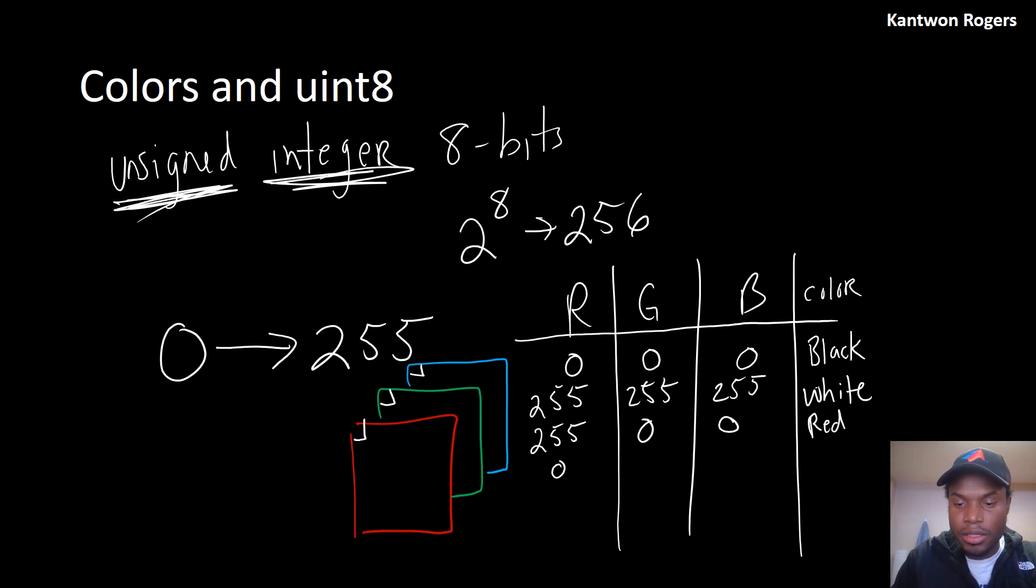Let's do all the different lines. 0, 255, 0. In this case, you'll get a pure green. In this case here, 0, 0, 255, you'll get pure blue.